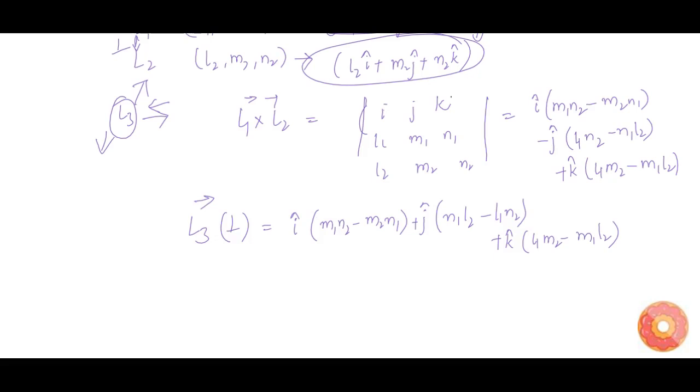Since this is the unit vector, the X, Y, Z components are nothing but the DCs. Therefore, the DCs of line L3 is given by M1 N2 minus M2 N1, N1 L2 minus N2 L1, and L1 M2 minus M1 L2.